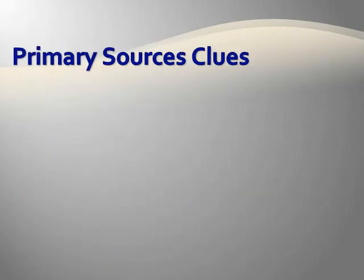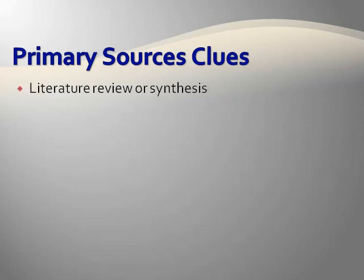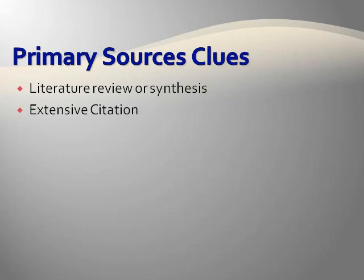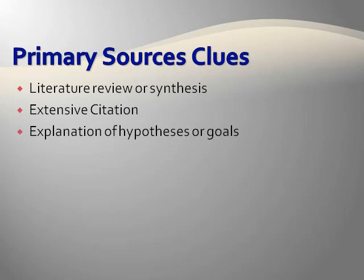Here are some clues that let you know that you are looking at a primary literature source. A report of primary research often begins with a literature review or synthesis of the theory to be tested and other research relevant to the topic being studied. This helps set the context of the work or study. It will contain extensive citations, usually in the introduction and in the conclusion or discussion sections. The introduction section includes, and usually ends with, an explanation of the hypothesis and/or goal of the research. The hypothesis and goals usually also appear in the abstract or summary.